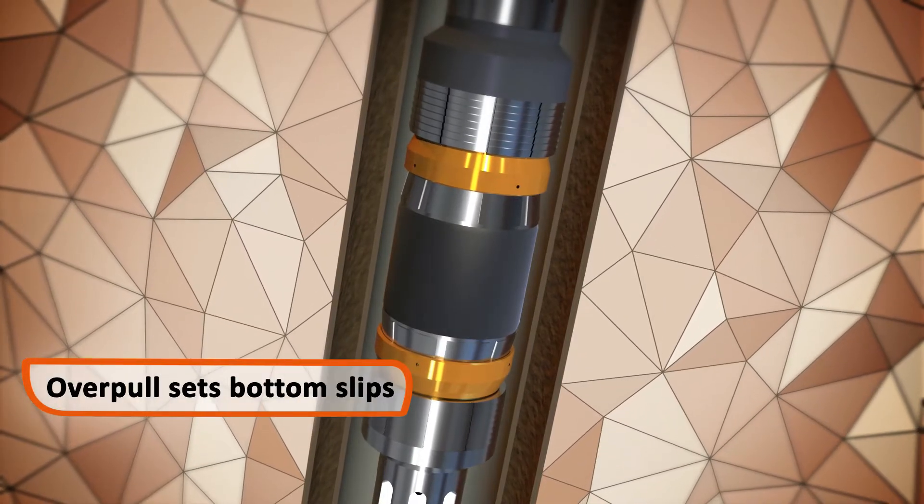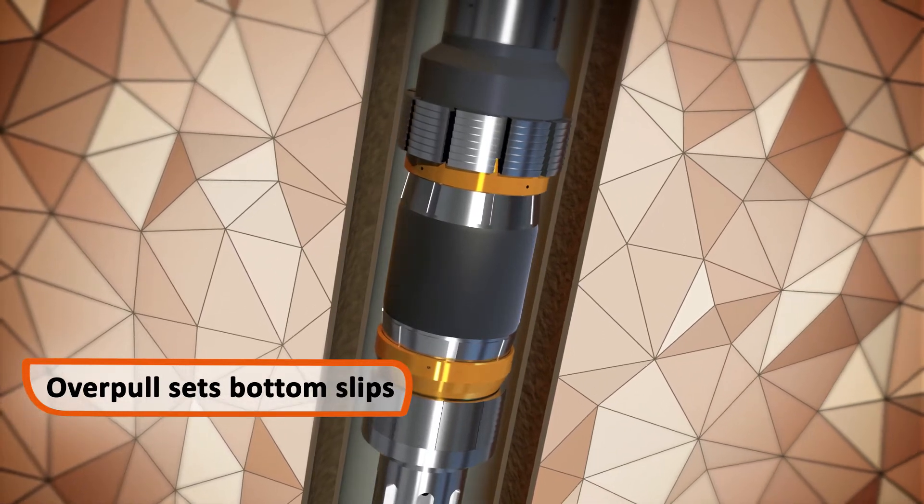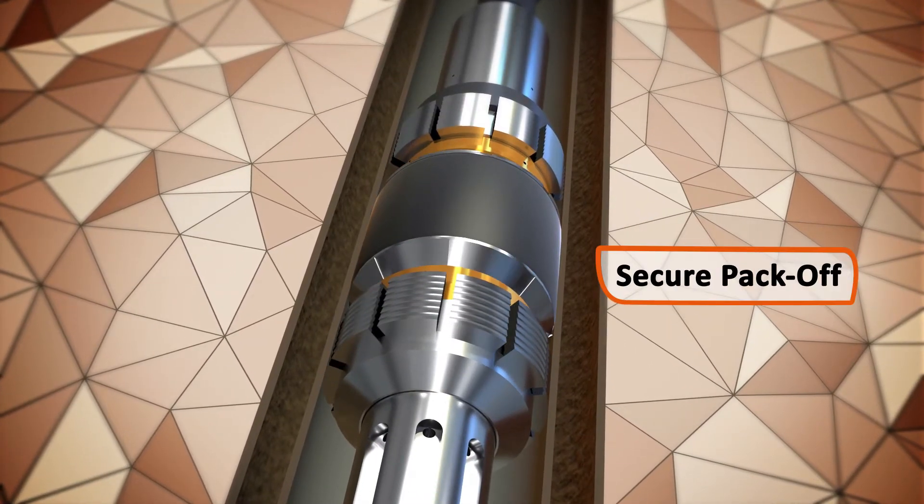Overpull then mechanically sets the bottom slips, allowing the elements to pack off securely against the casing ID.